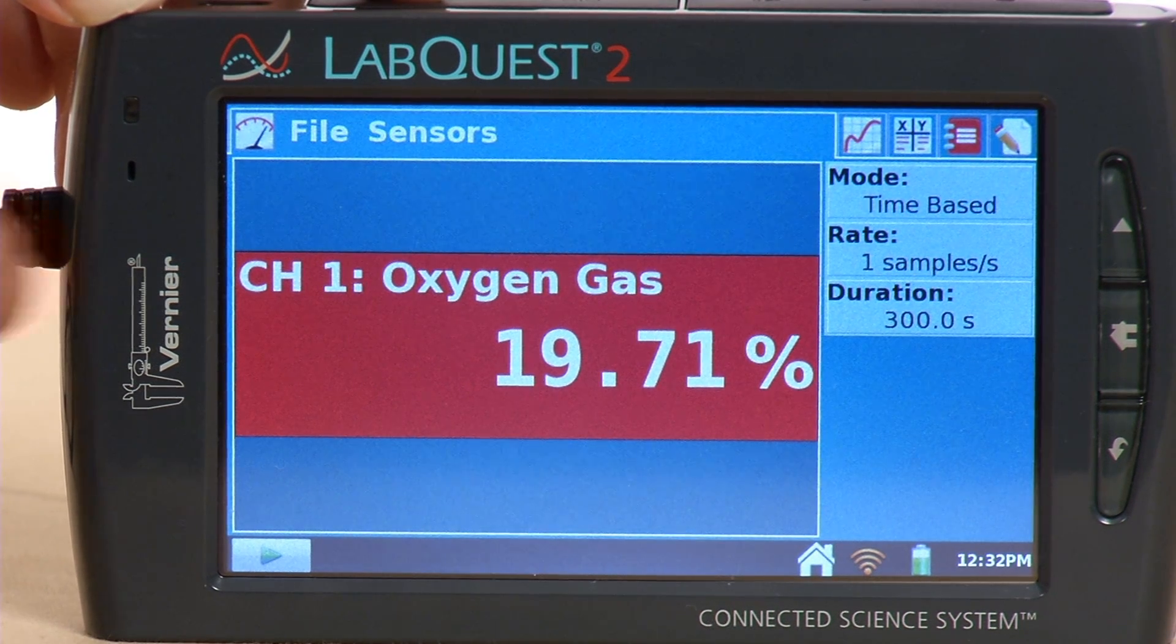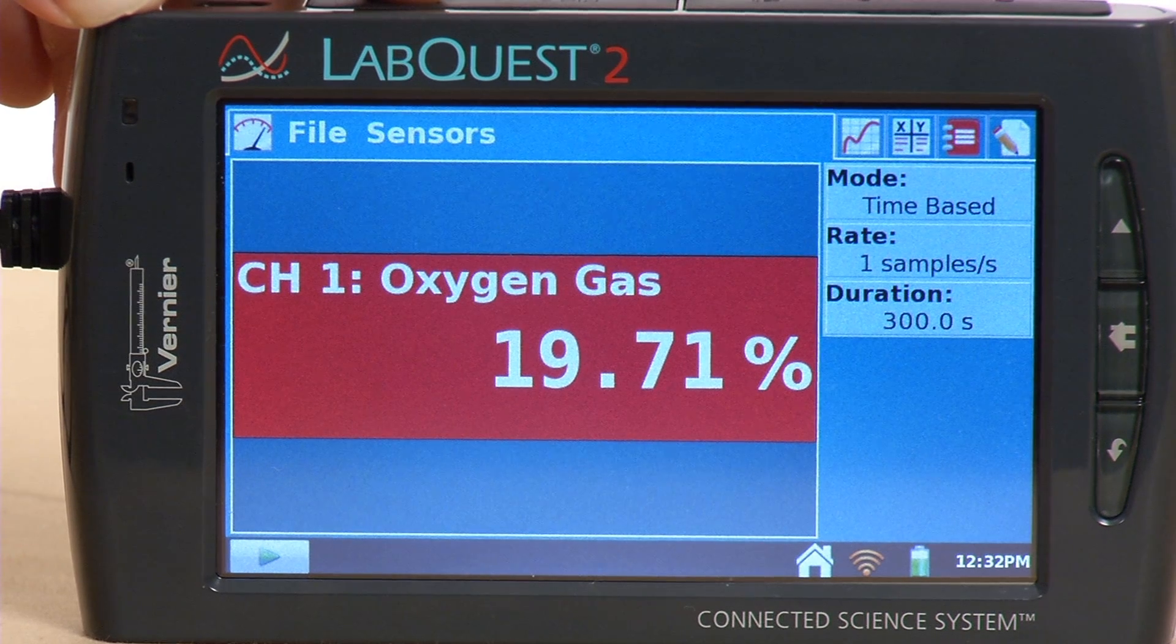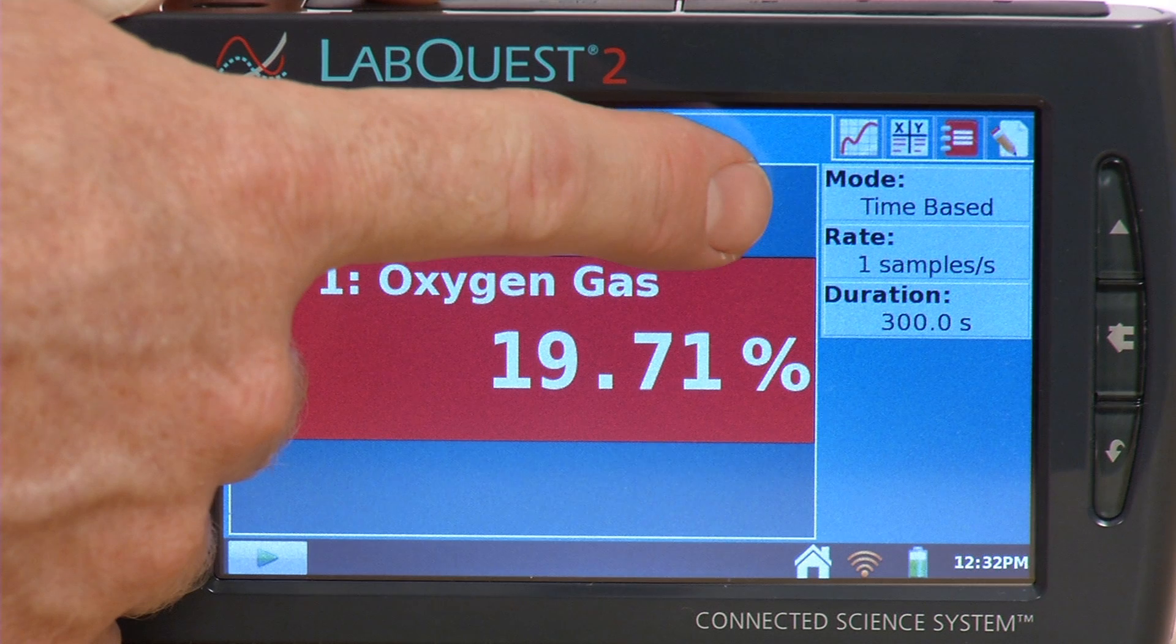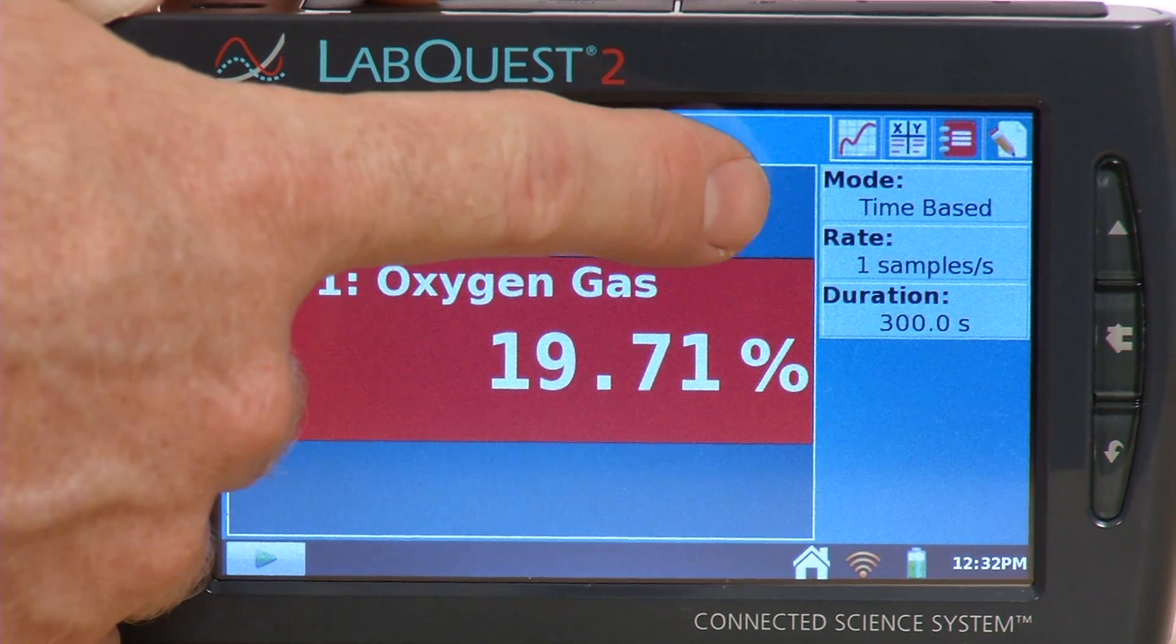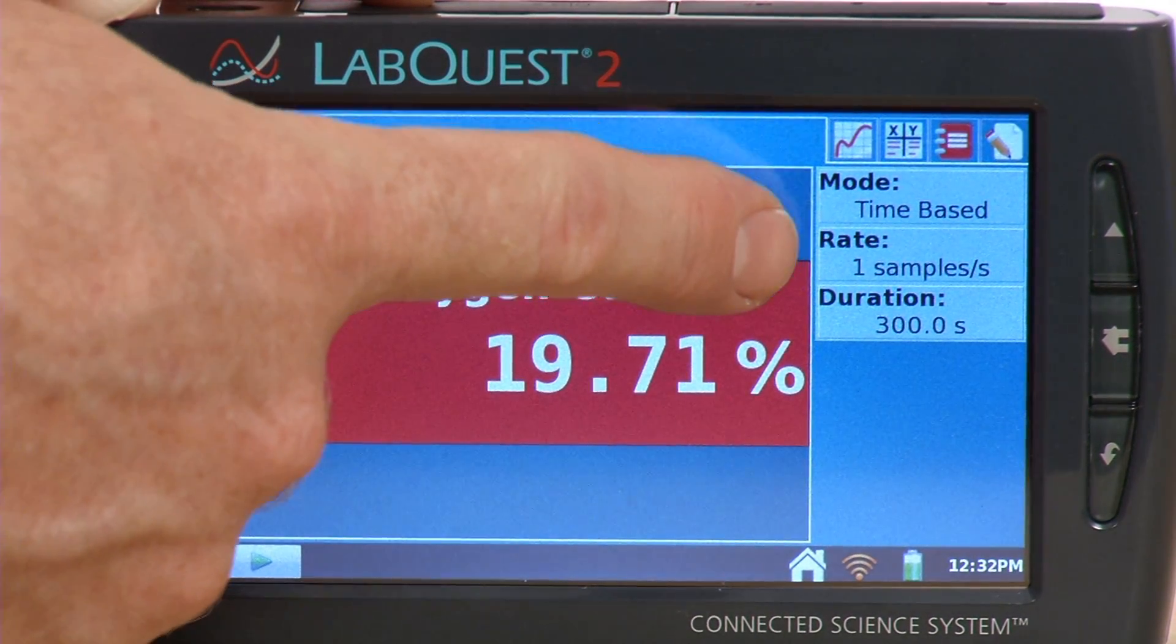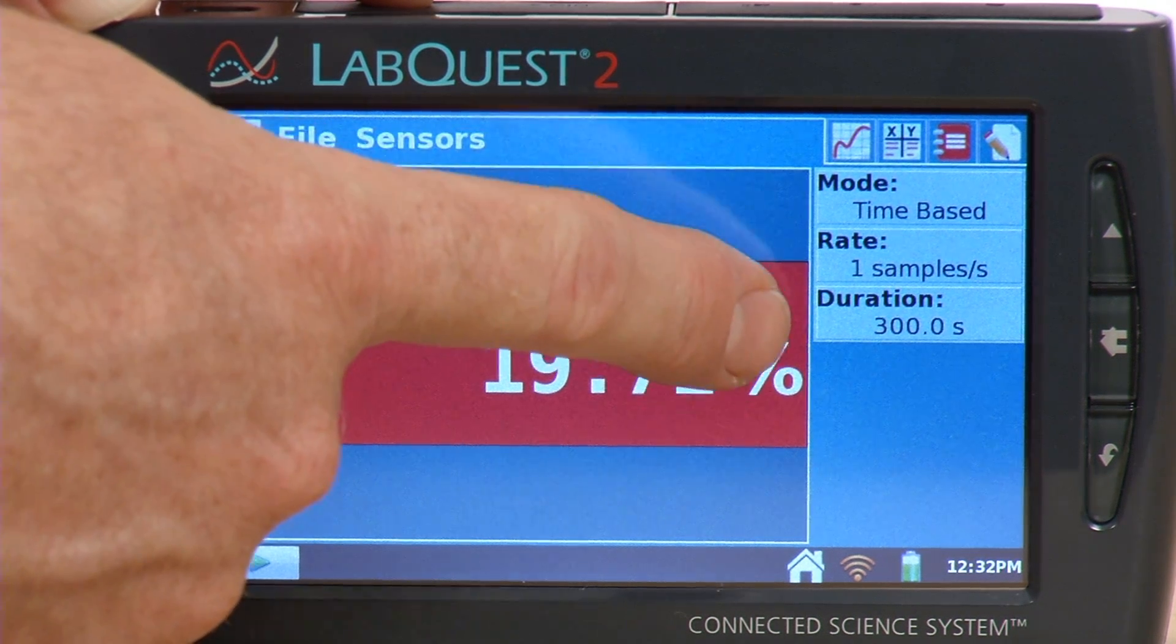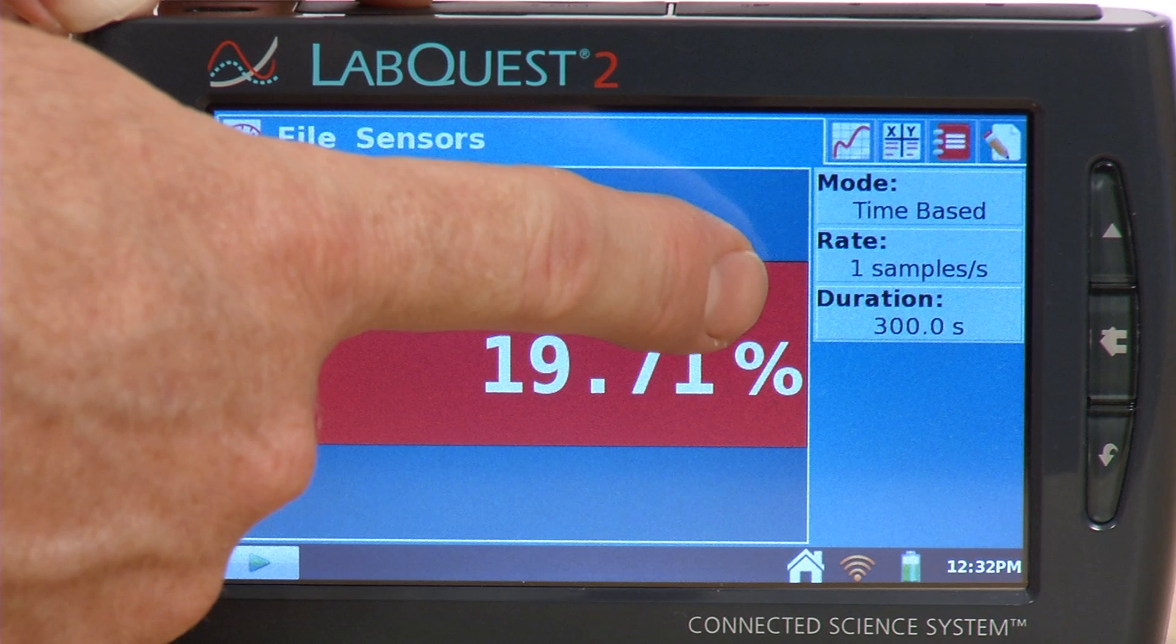Now if you'll look to the upper right corner there, we'll see our default collection parameters. So the mode is time-based, meaning we're looking at the oxygen concentration as a function of time. The default rate is one sample per second. And the default duration is 300 seconds, or five minutes.